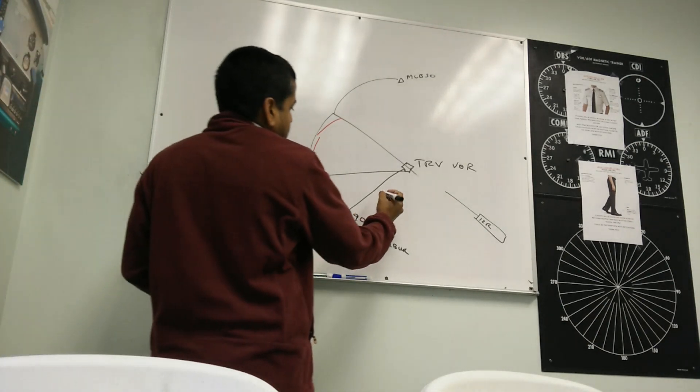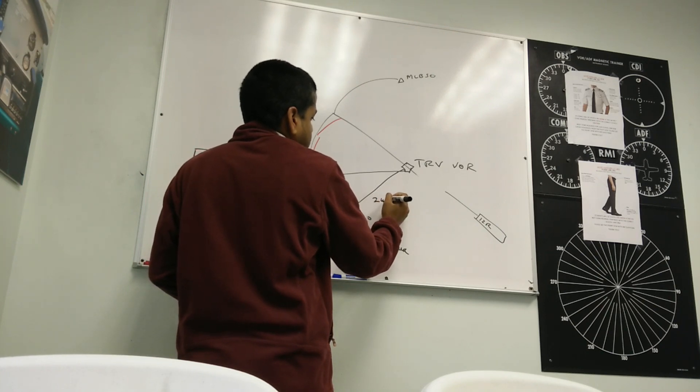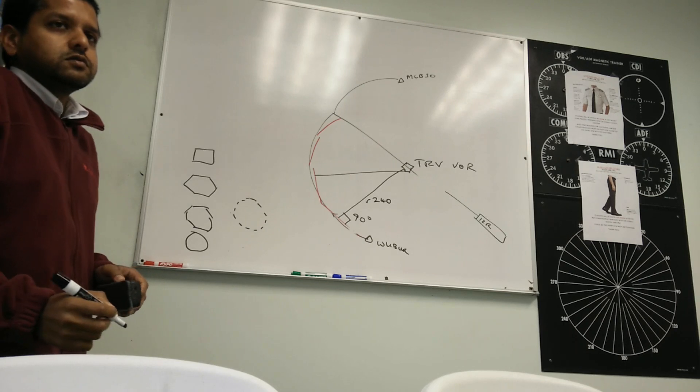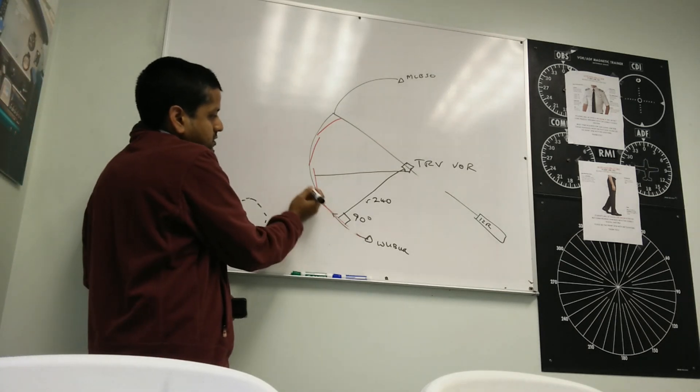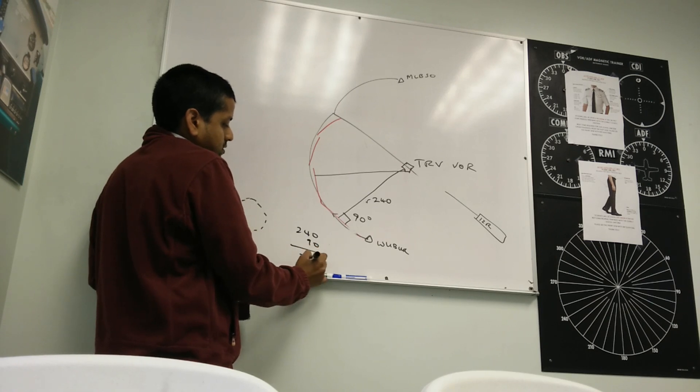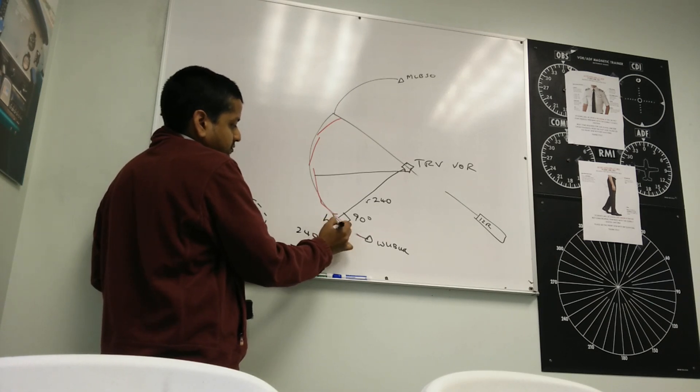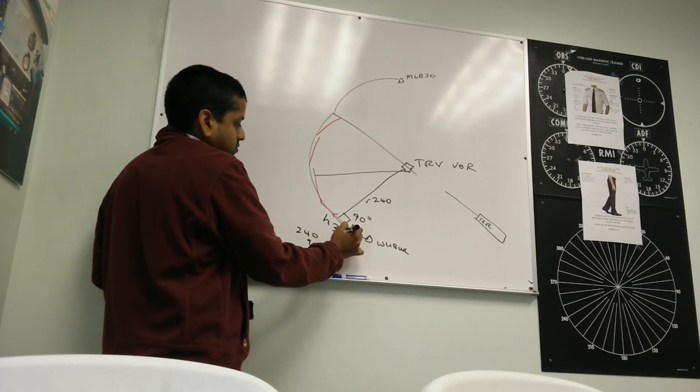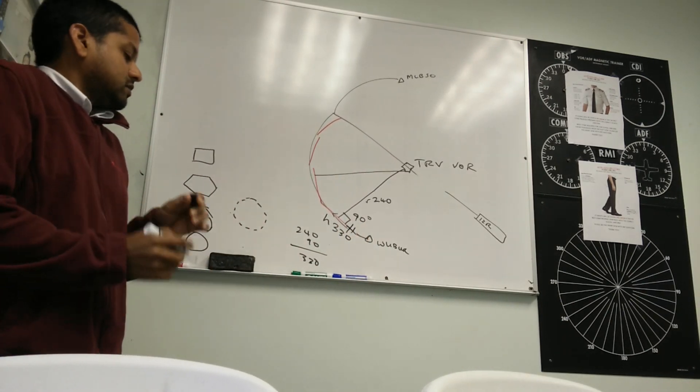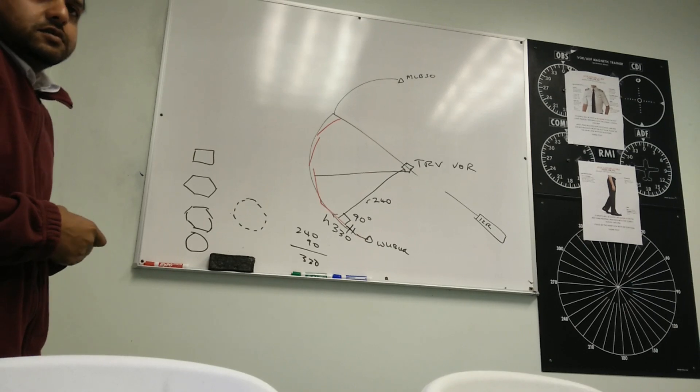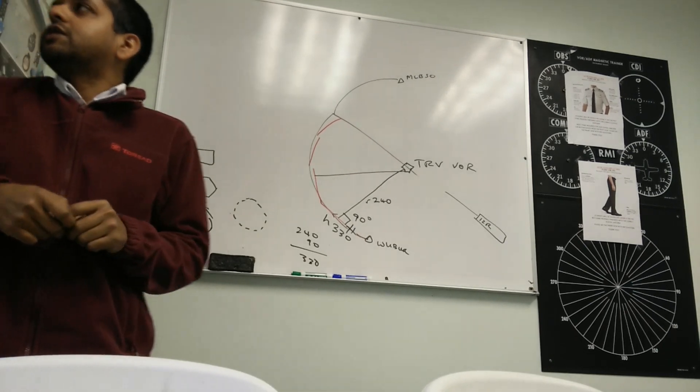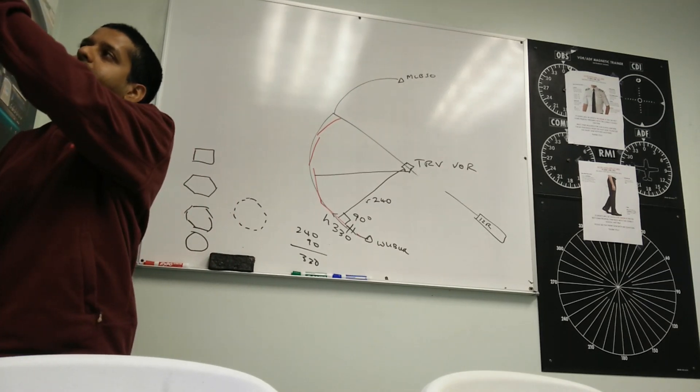So let's say that's radial 2-4-0. What heading would you be flying here? You'd be flying, well, figure in this direction. 2-4-0. 2-3-0. So here you'd actually be flying the heading of 3-3-0. That's your aircraft. Now it's very easy to figure out what heading.